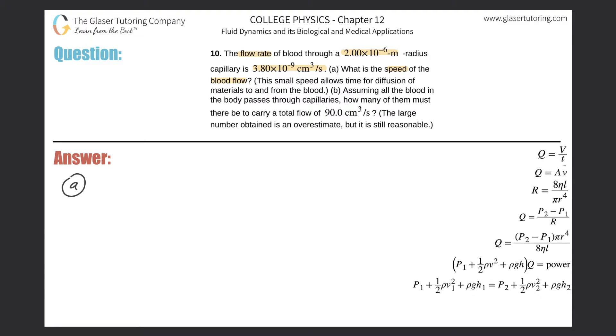So now letter A, we are given a flow rate, a volume flow rate. It is given to us in, unfortunately, cubic centimeter per second. The reason why I say unfortunately, there's 3.8 times 10 to the minus 9 cubic centimeters per second, is because they gave us the radius in meters, 2.00 times 10 to the minus 6 meters.